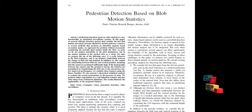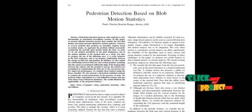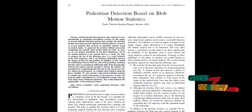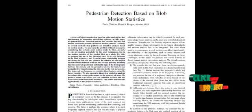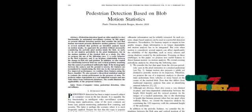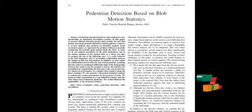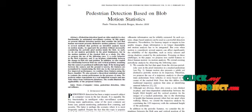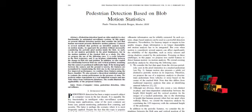Then, the background subtraction process is done. We can identify the blobs in the video using this process. The objects are identified by finding their centroid position, x and y coordinates of the blobs, their area, height, and width. The identified blobs are then tracked by plotting a rectangular box around them based on the calculated values from the blobs.